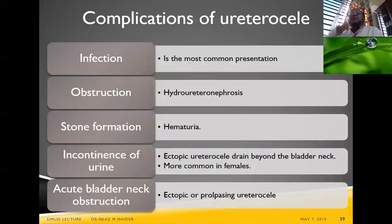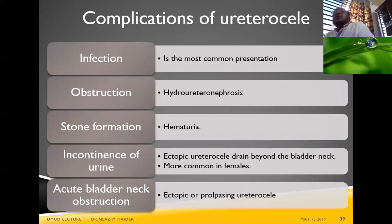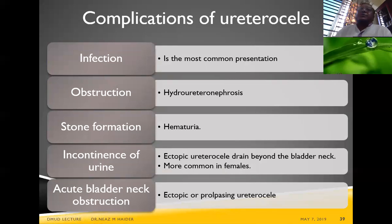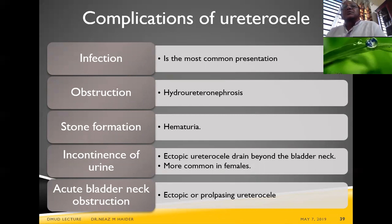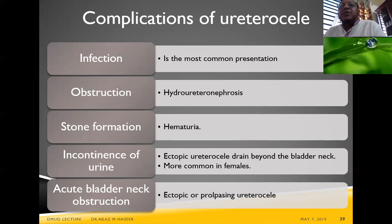Complications of ureterocele include: infection (the most common presentation), obstruction, hydronephrosis, stone formation, hematuria, urinary incontinence, and acute bladder neck obstruction.